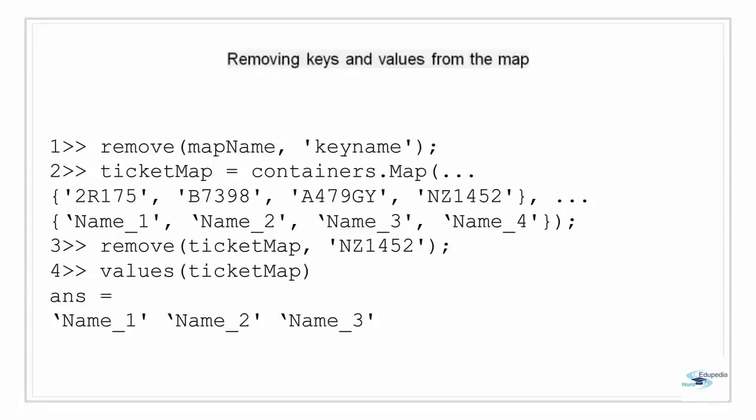Removing keys and values from the map: we use the remove method to delete any entries we do not want. When calling this method, we specify the map object name and the key name to remove; MATLAB deletes the key and its associated value. The syntax is shown in line 1. Using the ticketMap with four entries, removing key nz1452 also removes its associated passenger name 4, so checking the values afterwards returns only 3 names.